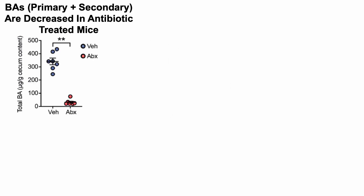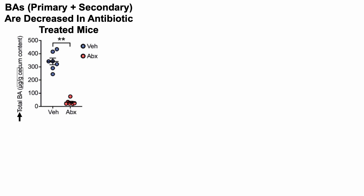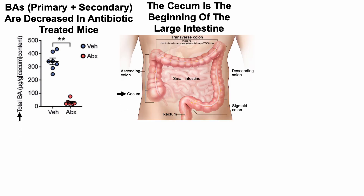Having differences in bacterial functions doesn't always translate into metabolite levels. But the authors looked at total levels of bile acids — the metabolite levels — in the cecum, which is the beginning of the large intestine. What we can see is that antibiotic-treated mice have a dramatic reduction in bile acid levels in the cecum, from around 350 micrograms per gram down to less than 50 in the antibiotic-treated mice.